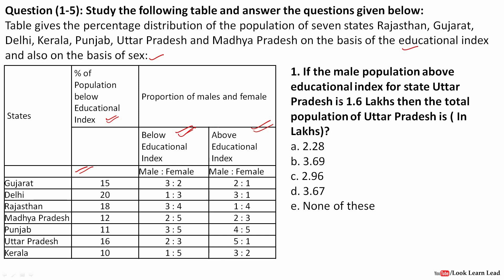The first question: the male population above educational index for Uttar Pradesh is 1.6 lakhs. In Uttar Pradesh, 16 percent are below the educational index, so above would be 100 minus 16 = 84 percent. This means 84 percent of the total population are above the educational index.